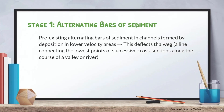Stage one: alternating bars of sediment. Meandering rivers always start off with pre-existing alternating bars of sediment, which means the river has already formed them via erosion and deposition occurring within the river channel itself. These pre-existing alternate bars of sediment form by deposition in lower velocity areas. Remember — in order for deposition to occur, there has to be low river energy and low river velocity.